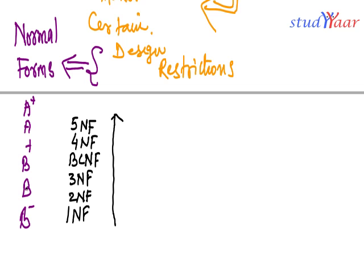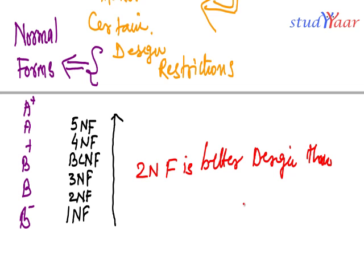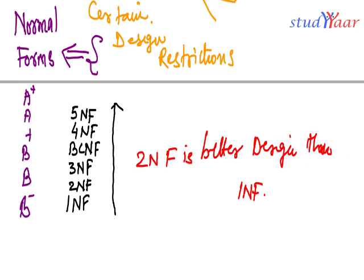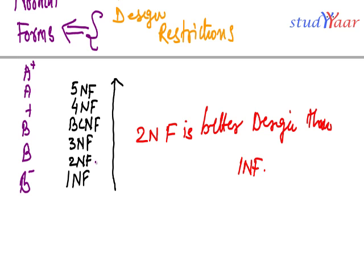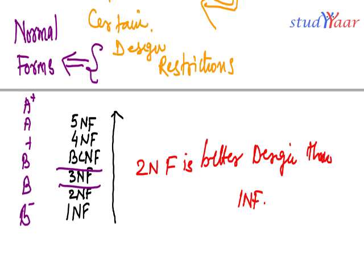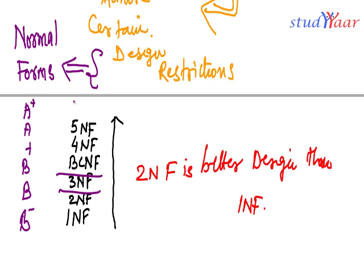As B is better than B minus, similarly I say 2NF is a better design than 1NF. If a relation is in 3NF, then automatically it is also going to be in 2NF and 1NF. So if my relational schema adheres to 3NF, then it automatically also adheres to 2NF and 1NF.